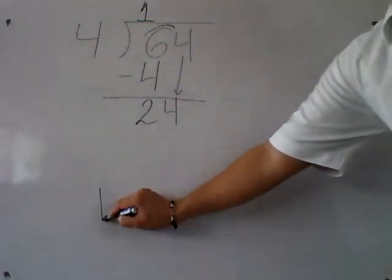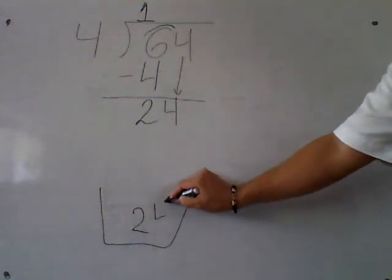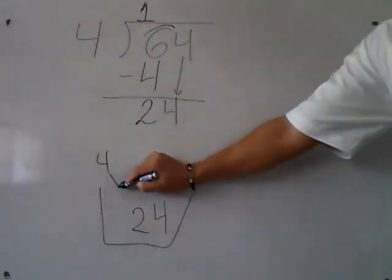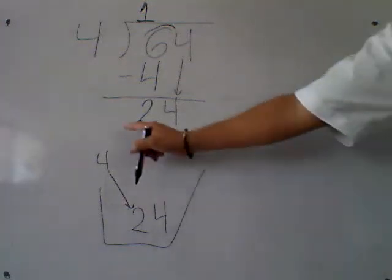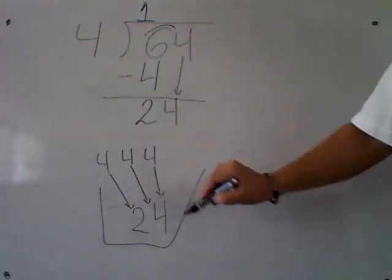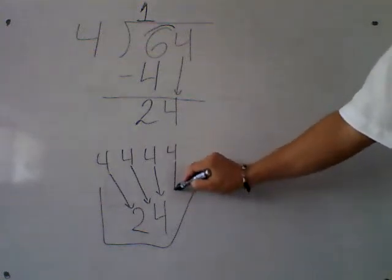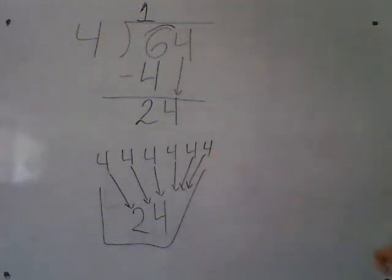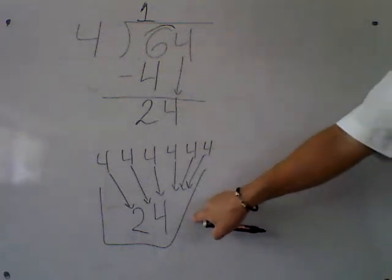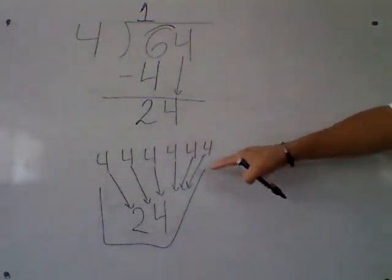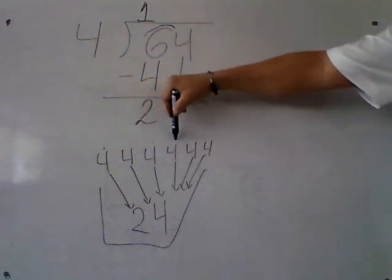Same example: you have a capacity of 24 and the number 4. How many 4s can you put inside this bowl? 1 four is 4, 2 fours is 8, 3 fours is 12, 4 fours is 16, 5 fours is 20, and 6 fours is 24. It's impossible to add another 4 because that would be 28, which is more than 24. So how many 4s could you put inside? 1, 2, 3, 4, 5, 6.